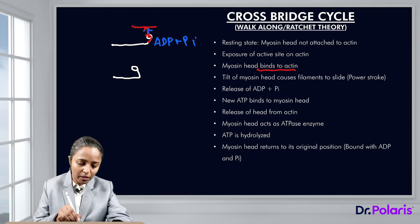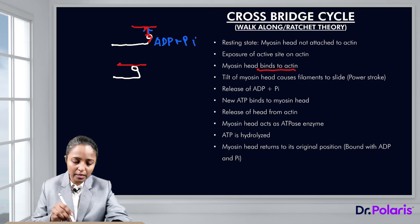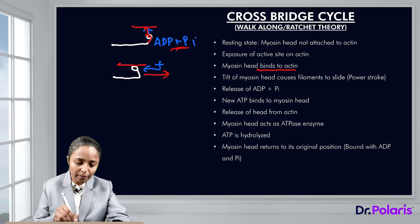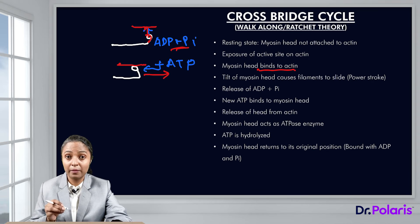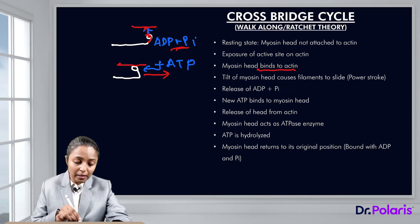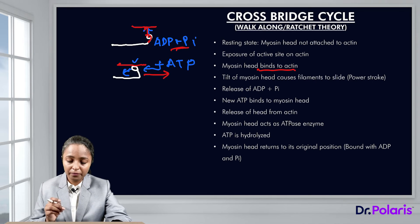Because of this bend, there is a pull of the actin filament — that is the power stroke. As soon as this bend occurs, ADP and phosphate are released from the myosin head, and ATP binds in their place. Binding of ATP decreases the affinity of the myosin head for actin, causing release of the myosin head from the active site of actin.